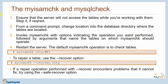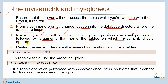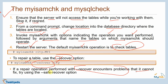Let's understand the sequence of steps for myisamcheck: ensure the server will not access the tables while you are working on them — stop it if required. From the command prompt, change to the database directory where your tables are located. Invoke myisamcheck with options indicating the operation you want to perform, followed by the table names. Then restart the server. You can also use the --recover option to recover a table; if that encounters problems, use --safe-recover.